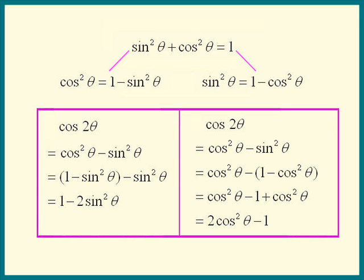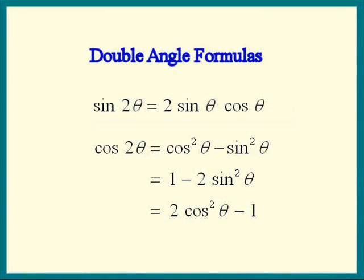As a result, the double angle identity for cosine has three formats. We can either use cosine squared minus sine squared, or 2 cosine squared minus 1, or 1 minus 2 sine squared. Because we use these often, it's best to just memorize them. Have fun. See you next time.